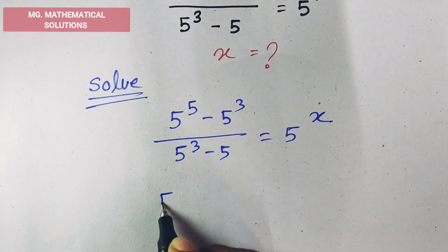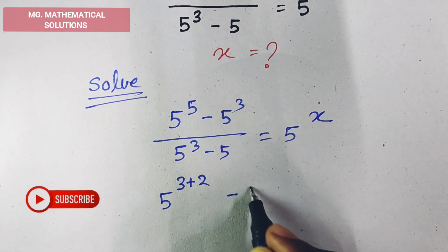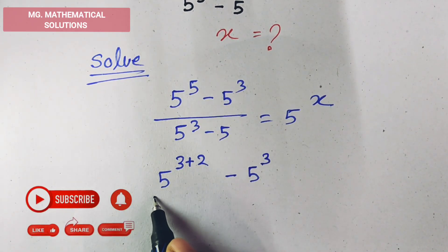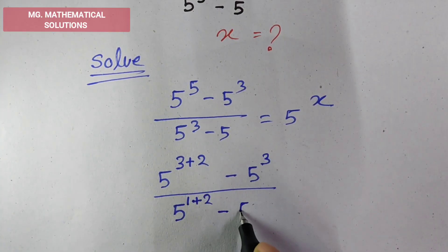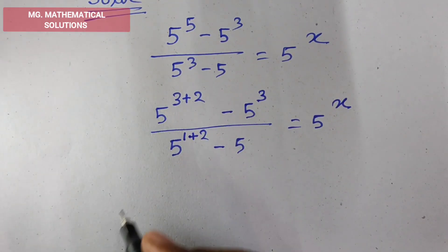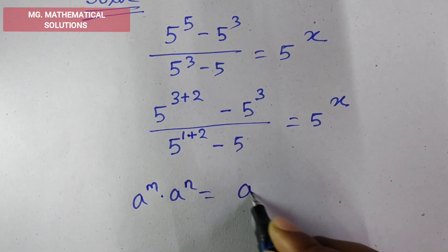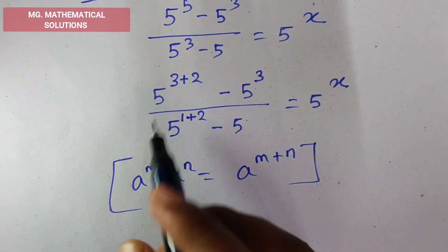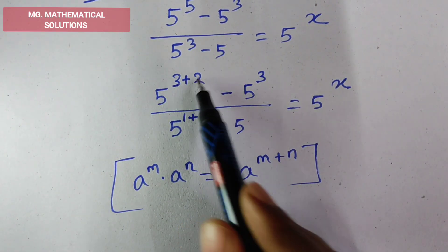So, 5 to the power 5 we can write as 5 to the power (3 plus 2), minus 5 cube; and 5 cube we can write as 5 to the power (1 plus 2), minus 5, equal to 5 to the power x. Here we use the formula: a to the power m into a to the power n equal to a to the power m plus n. Here a means 5, m means 3 and n means 2.